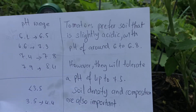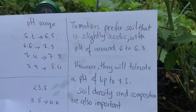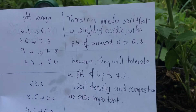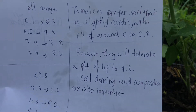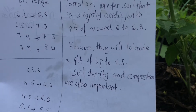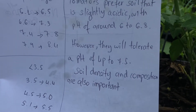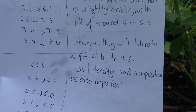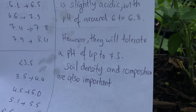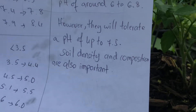Tomato prefers soil that is slightly acidic with a pH of around 6.0 to 6.8. However, they will tolerate a pH of up to 7.5. So soil density and composition are also important.